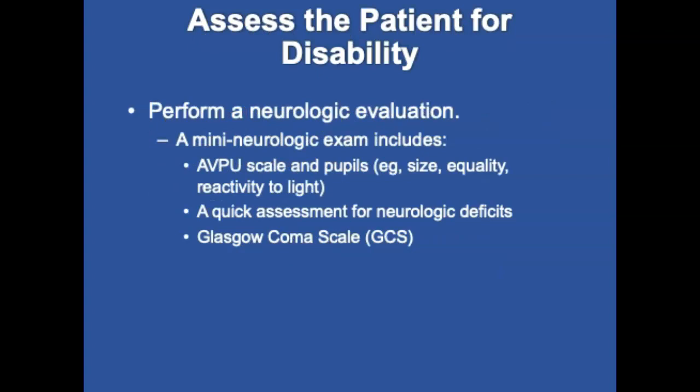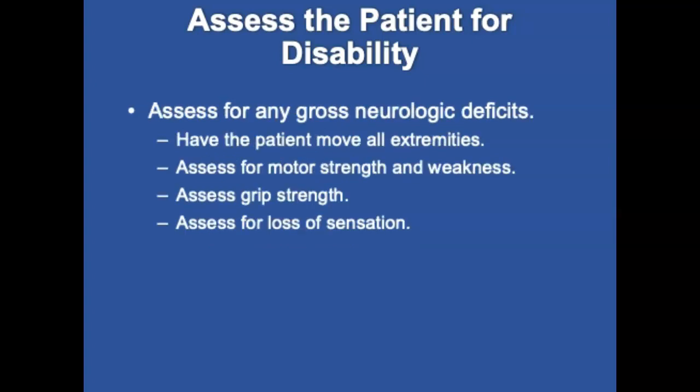Assess for disability — ABCD. Perform a neurologic exam including AVPU and pupils. The Glasgow Coma Score is the most commonly employed, reliable, and consistent method of assessing mental status and neurologic function. It assigns a point value for eye opening, verbal response, and motor response, and these values are added for a total score. Also assess for gross neurologic deficits: have the patient move all extremities, assess motor strength, weaknesses, and grip strength, and assess for loss of sensation.